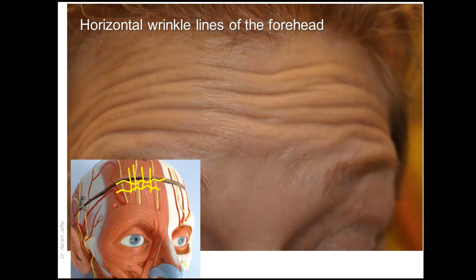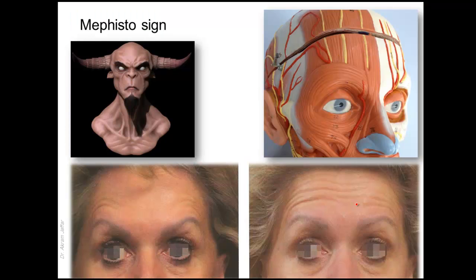The muscle extends laterally beyond the mid-pupillary lines. This should be kept in mind while injecting this muscle — the injection points should be extended laterally and not confined to the area between the pupillary lines. If the injection points are confined to the mid-pupillary lines, what happens is what we call the Mephisto sign.